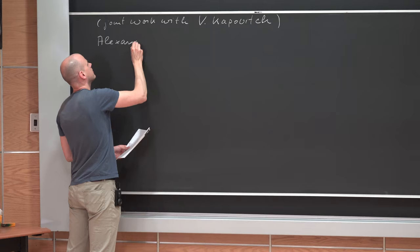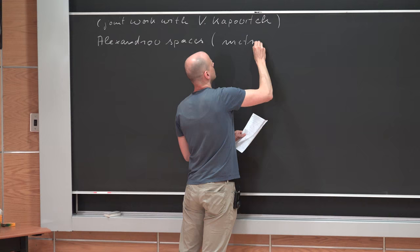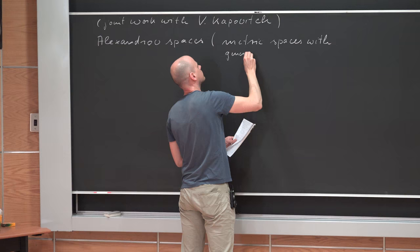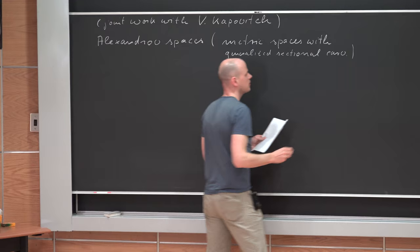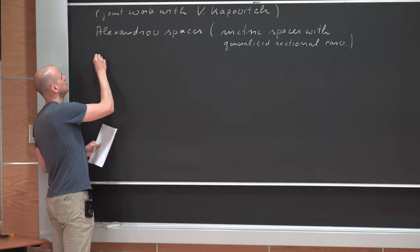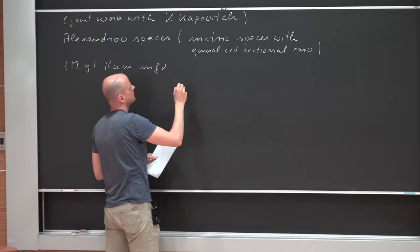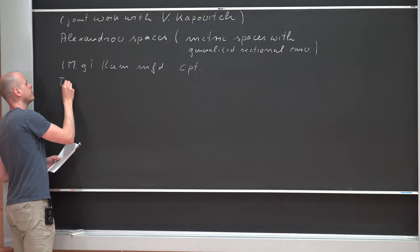I will start with Alexandrov spaces. The main result is about connections between Ricci curvature and sectional curvature for metric spaces. I assume the audience is not familiar with either of these two subjects, so in the first part of the talk I will give a brief introduction to both fields. I will start with Alexandrov spaces, which are metric spaces with generalized sectional curvature.